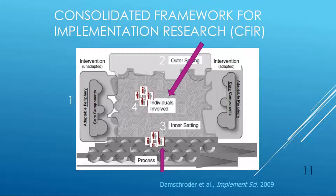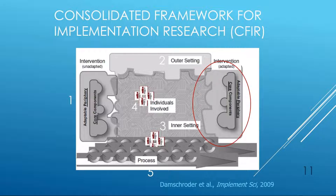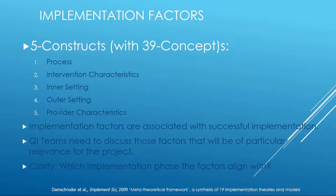We need to look at the process by which we would go about making the change, and understand that sometimes interventions need to be adapted. Within CFIR, because it is a consolidated framework from 18 other frameworks, there are five constructs and 39 concepts. The constructs are: process, intervention characteristics, inner setting, outer setting, and provider characteristics.